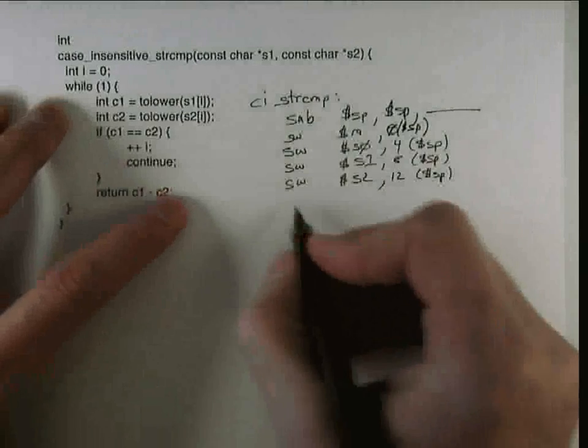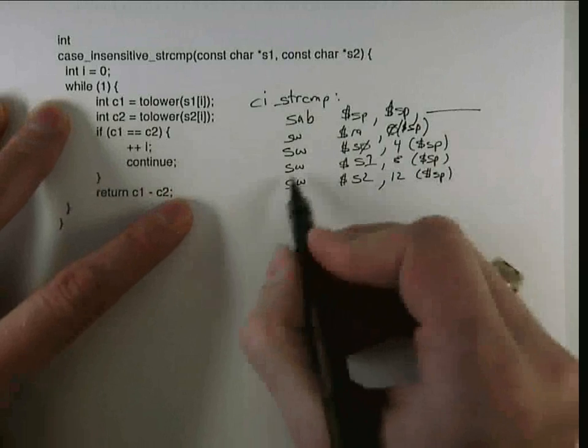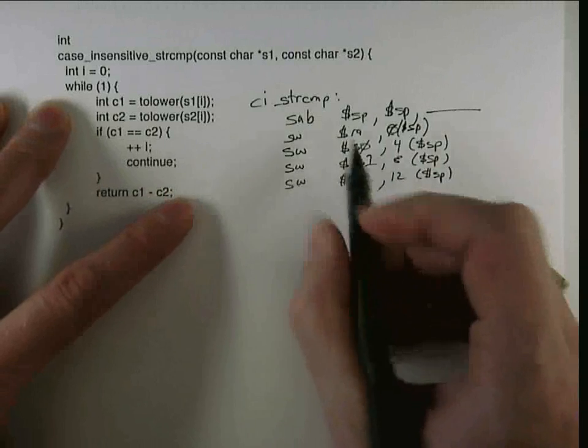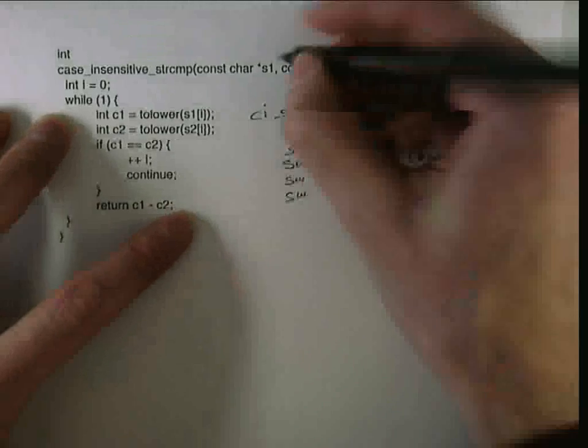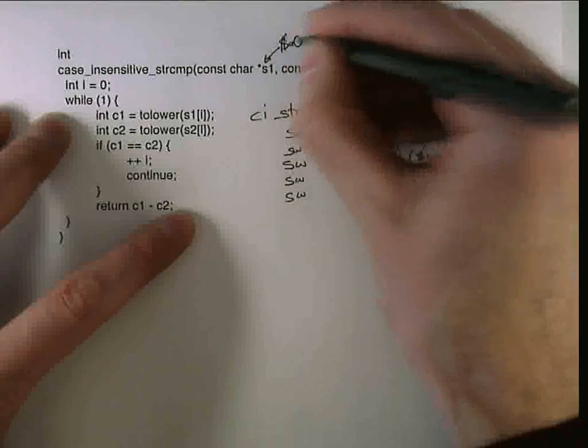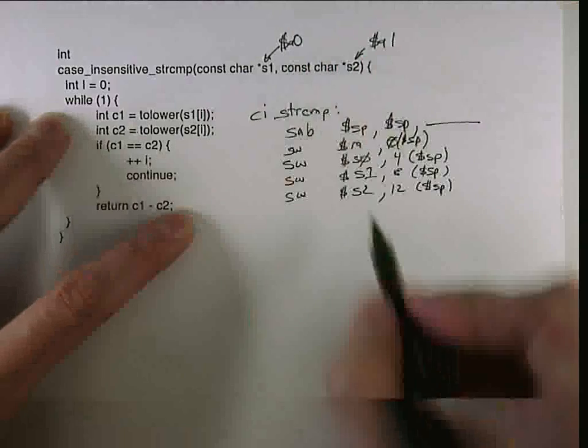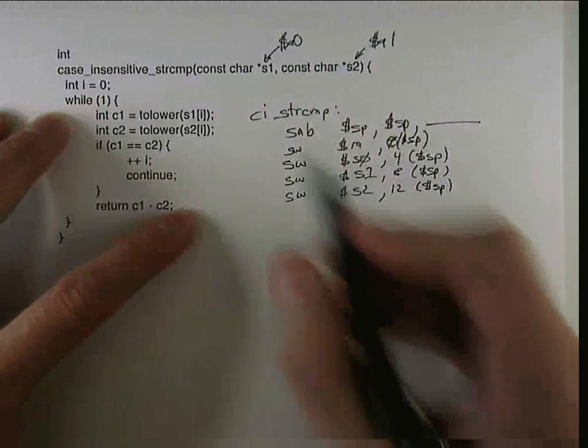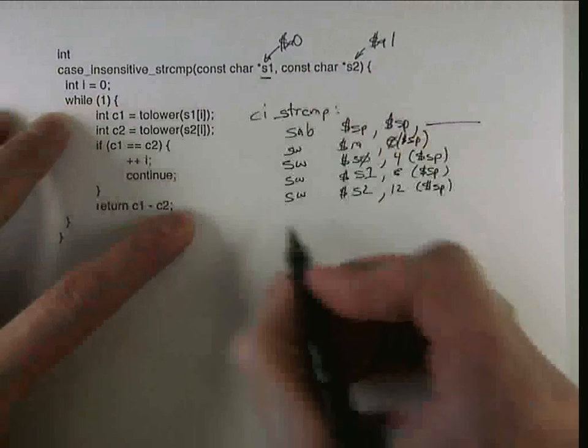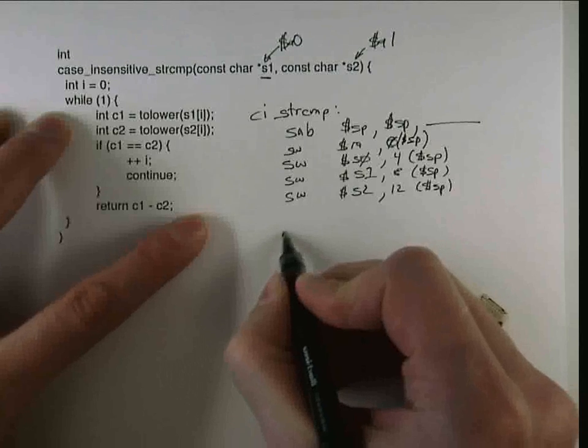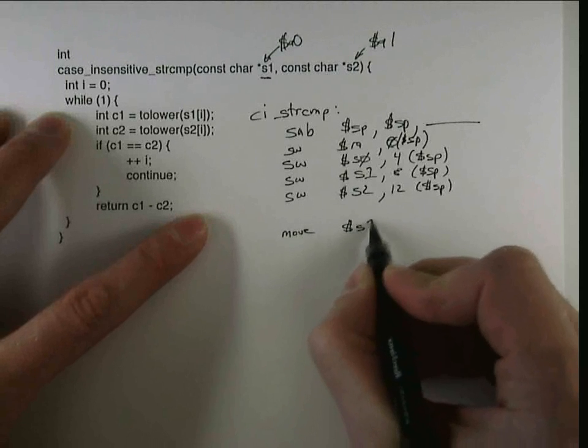So I've freed up some registers, and what this lets me do is now I can take these variables that are in a0 and a1, and I can copy them into the s registers. So because this is called s1 in the code, I'm going to allocate it to s1.